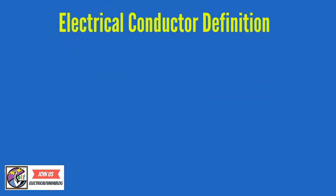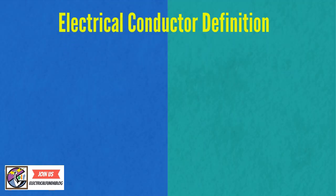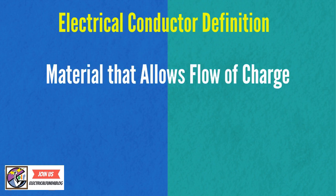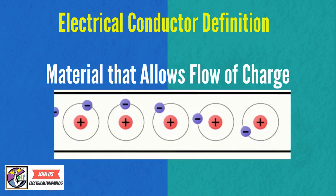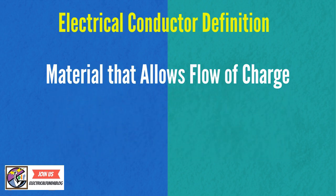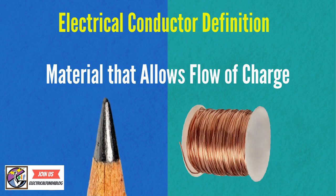Here we can see the definition of electrical conductor. A conductor is a material that allows flow of charge. The flow can be more than one direction. Conductors are commonly made up of metals. Electrical conductors can be metallic and non-metallic both.